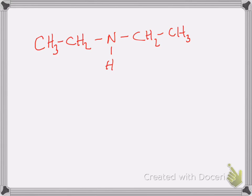This molecule is an amine. I know that because amines have a structure in which you have a nitrogen atom connected to three different things. That can be all hydrogens, one R group and two hydrogens, two R groups and one hydrogen as we see here, or three R groups. Once you recognize it as an amine, that gives you your parent or family name.